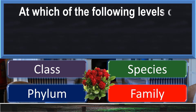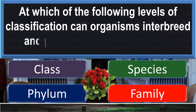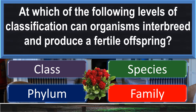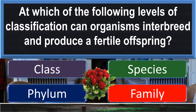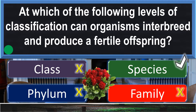At which of the following levels of classification can organisms interbreed and produce a fertile offspring? Species.